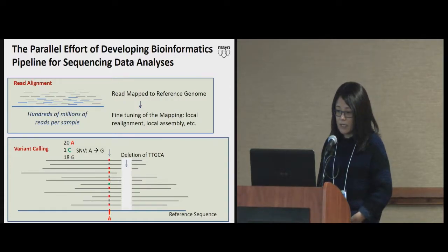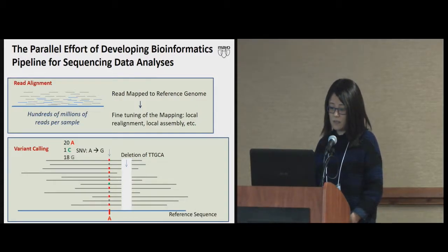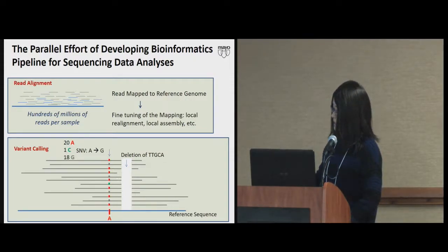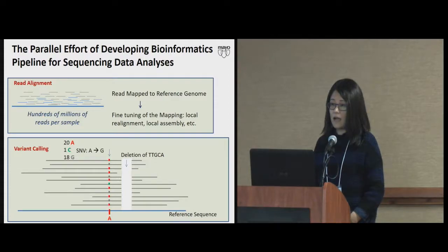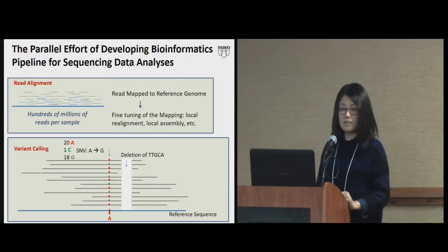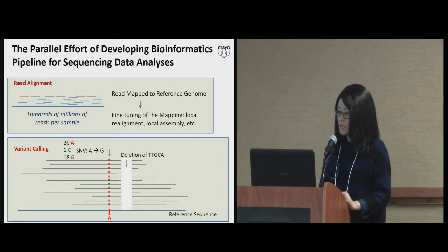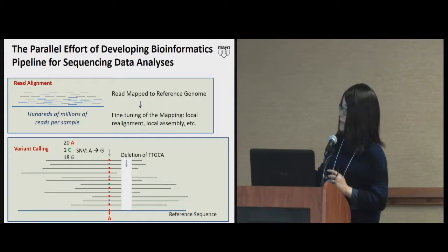Before I get into why we need BlueWater, here is the simplified version of the data analysis steps — two major steps. First, after you sequence an individual, you get hundreds of millions of reads. The first step is to map them onto the reference genome. Because you cannot afford to do a true multiple sequence alignment, you do pairwise — each individual read mapped to the reference. After that, because pairwise is not very sophisticated, you do local block-by-block realignment and local assembly to wiggle the bundle of reads into a better mapping.